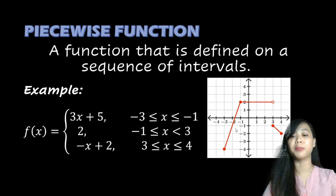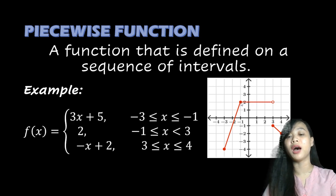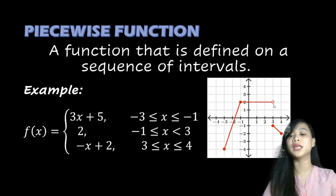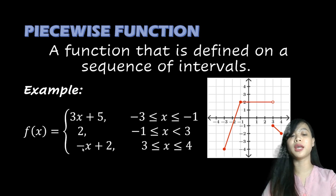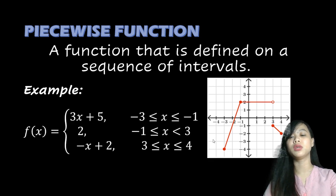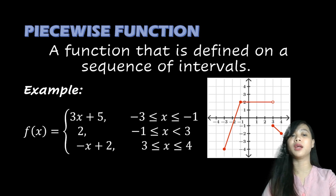For the second interval from negative 1 to positive 3, f(x) = 2. A shaded dot means the x value is included in the solution, while an unshaded dot means the x value is not included. For the third function, f(x) = negative x + 2, from 3 to 4: substituting 3 gives negative 3 + 2 = negative 1, and substituting 4 gives negative 4 + 2 = negative 2. That's it for piecewise functions.